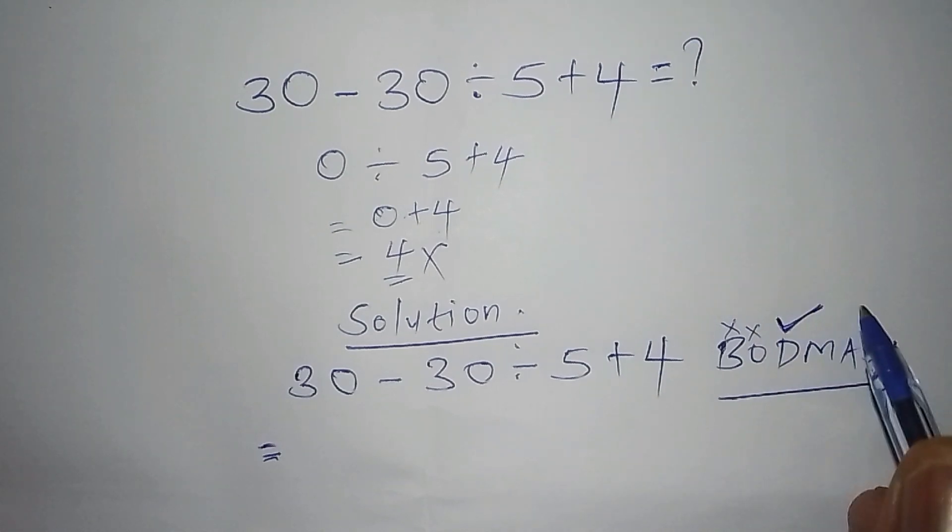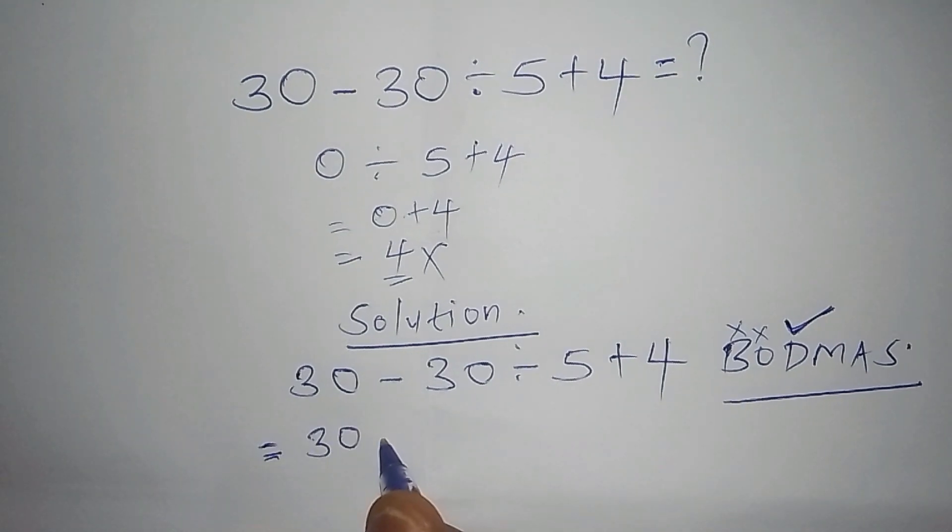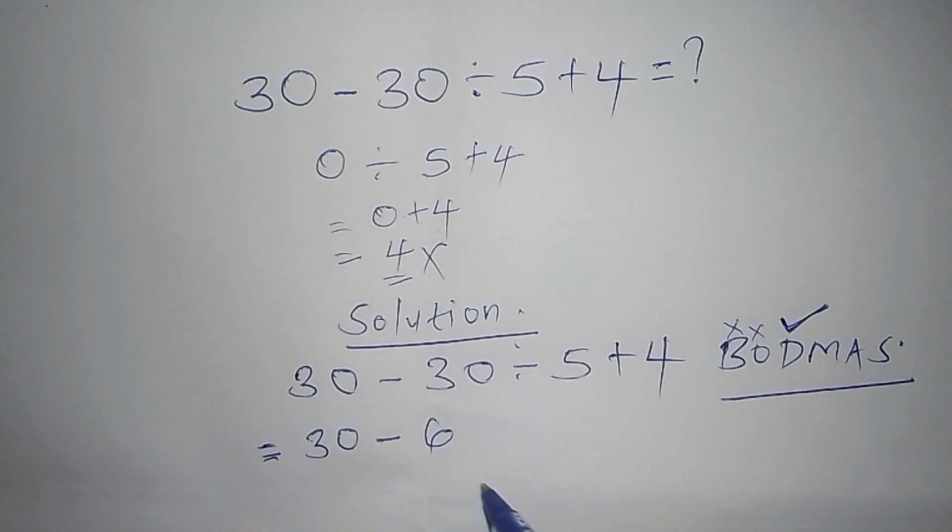So we have the D. So here, we are going to work out the division, so here we shall now have 30 minus, so 30 divided by 5, and 30 divided by 5 is 6, then 6 plus 4.